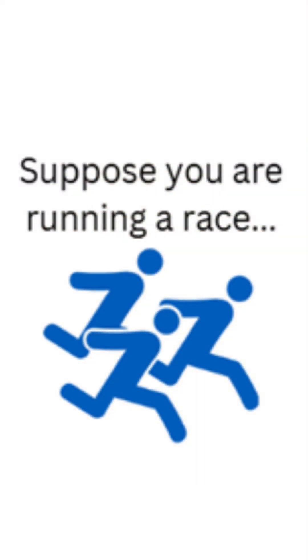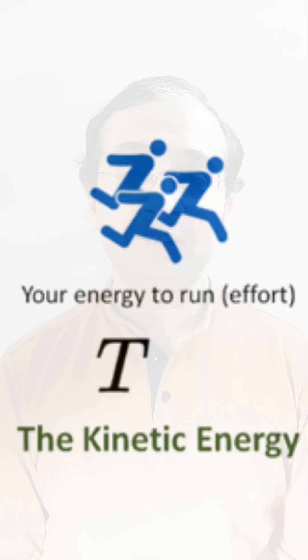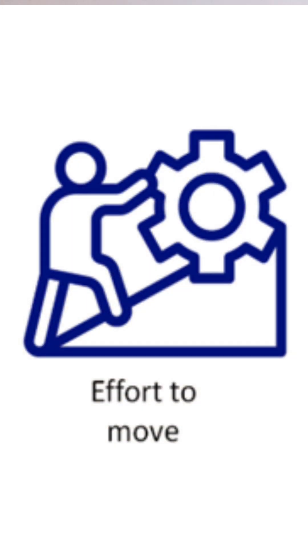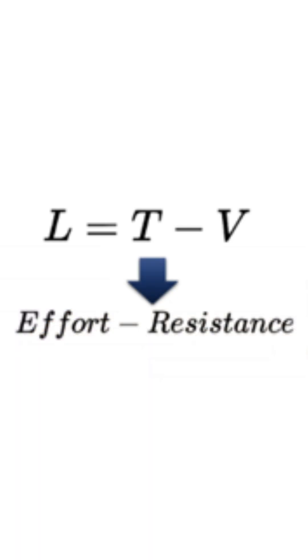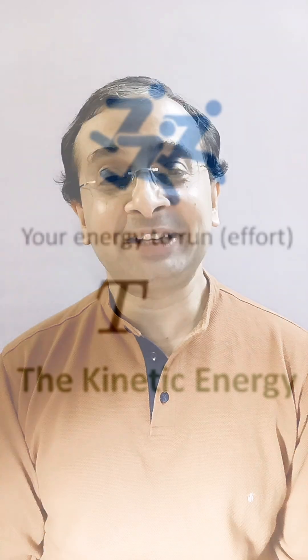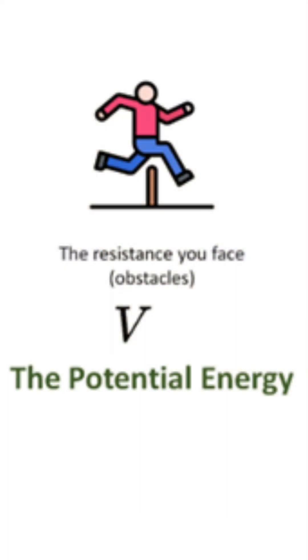So what is actually the Lagrangian? Let us take an analogy: you are walking or doing a race and there is something called your effort — that is how fast you run — and the resistance you get in terms of blockages, friction, or how difficult the track is. You can think of the Lagrangian as effort minus resistance, where the effort is the kinetic energy and the resistance is the potential energy.